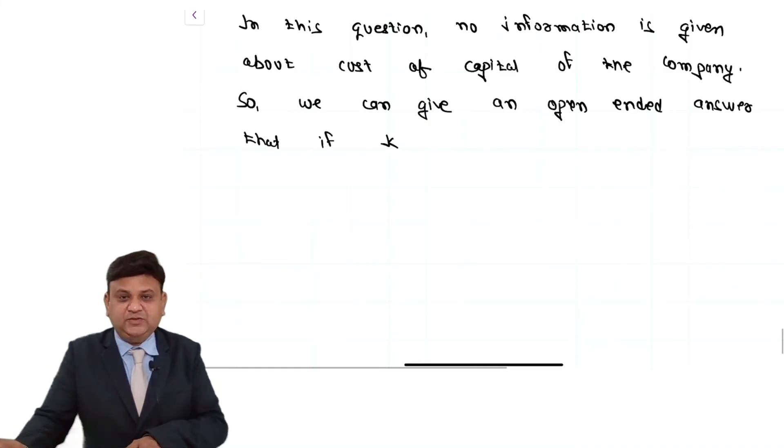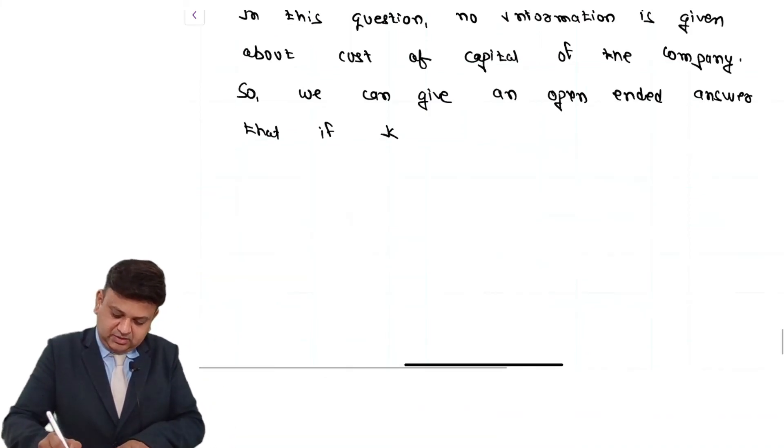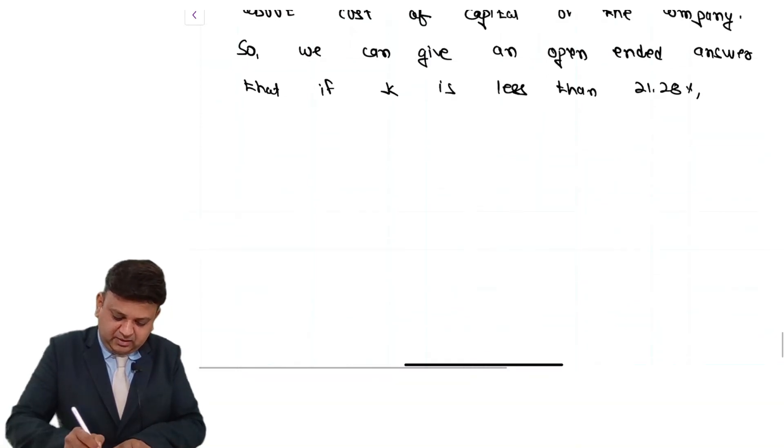That if K, K stands for cost of capital, is less than 21.28%, avail cash discount, not otherwise.